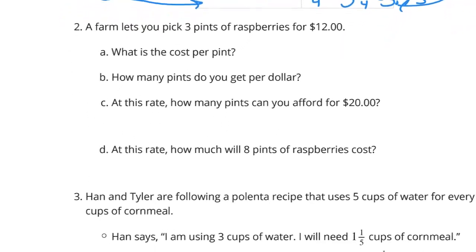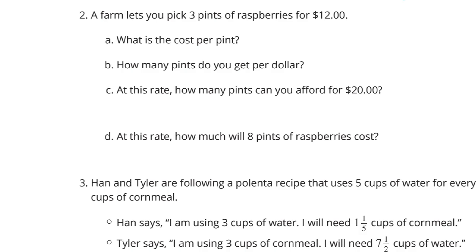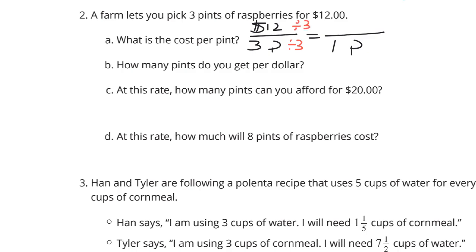A farm lets you pick 3 pints of raspberries for $12. What is the cost per pint? Our cost is $12 for 3 pints. To get to 1 pint, we divide by 3. And 12 divided by 3 is $4 per pint.